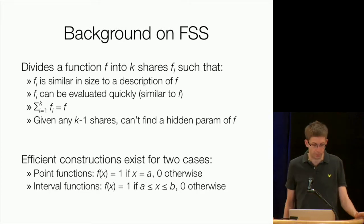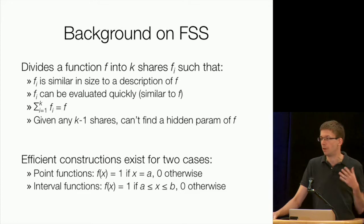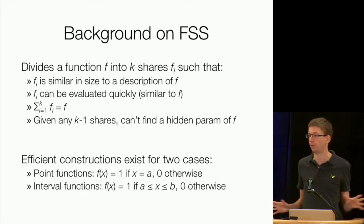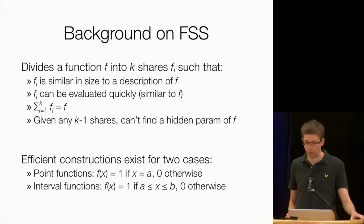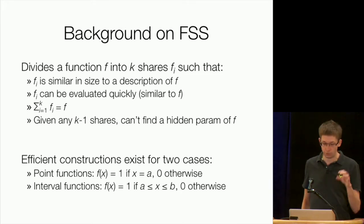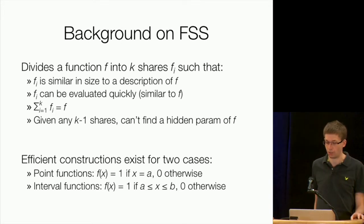And second, the sum of the shares Fi is equal to F. These functions return elements over a group or something like that, and the sum of them is always F. And finally, given any K minus one of the shares, you can't find a certain hidden parameter of F unless you're able to, unless you can basically break one-way functions or the other things involved in building this. So that's what FSS means. Now, efficient FSS protocols exist for two cases that we're going to build on in this project. The first one is point functions. So here you have F of X is one if X is a certain secret value A, and it's zero otherwise. And you can actually break this into shares so that the servers can figure out what A is. And then the second one is interval functions. So F of X is one if X is somewhere inside this interval from A to B, and it's zero otherwise. So that's kind of what we have. And for these, you can actually build these using just AES, and you can get these efficient constructions.